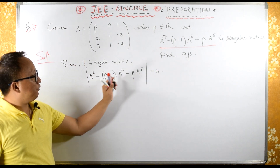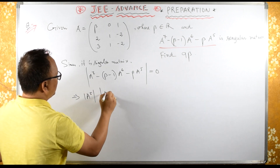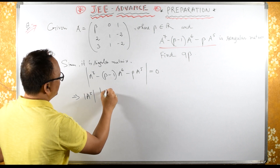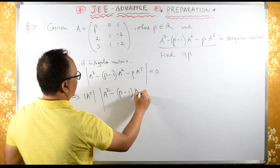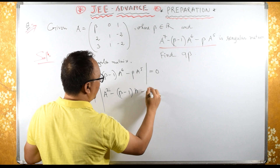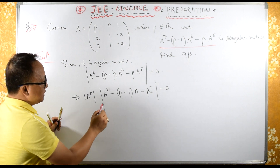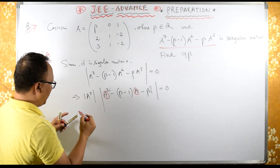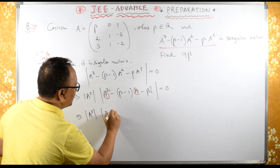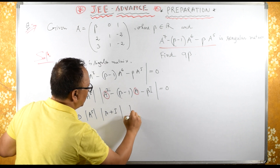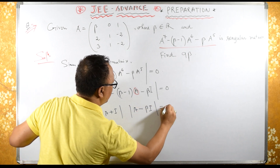Here I can take A raised to 5 as common factor. So determinant of A raised to 5 times the remaining expression: I get A squared minus (beta minus 1) A minus beta, which gives identity matrix, equals zero. This is quadratic in A, so it factors as determinant of A raised to 5 times (A plus I) times (A minus beta times I) equals zero.